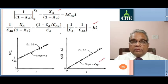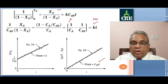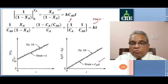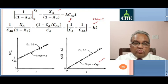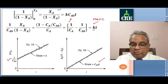This can also be expressed using the definition of CA: 1 upon CA minus 1 upon CA0 equals k times t. To plot this: on the Y-axis use XA by (1 minus XA) versus t on the X-axis in Y equals mx form, where slope equals k CA0, giving k directly. Or in Y equals mx plus C form, plot 1 upon CA on the Y-axis versus t, where slope equals k and intercept equals 1 upon CA0.